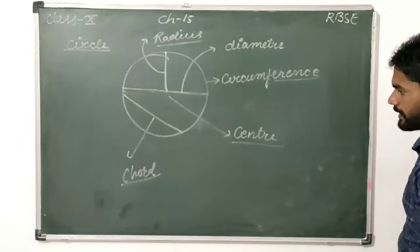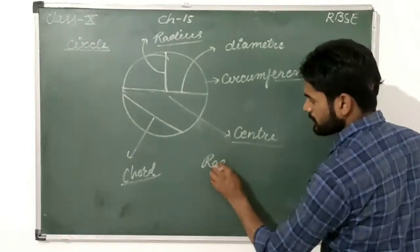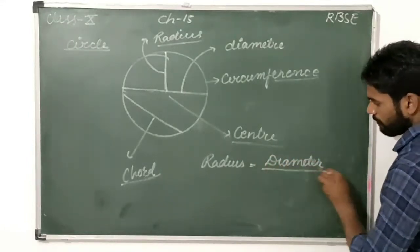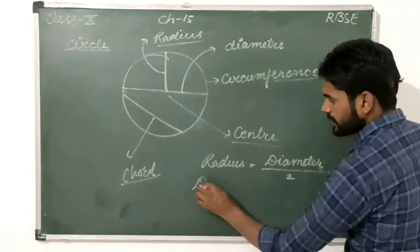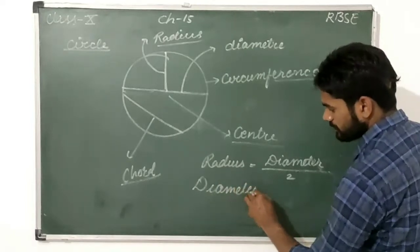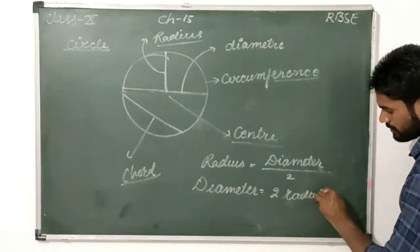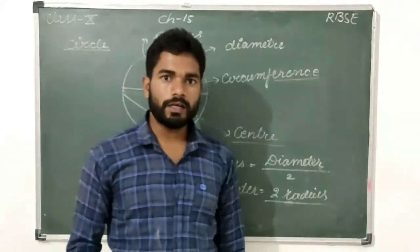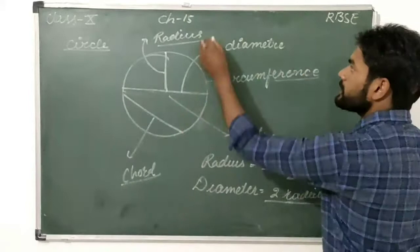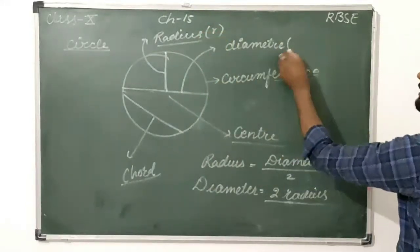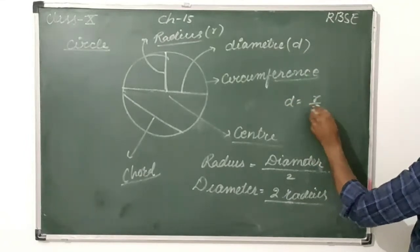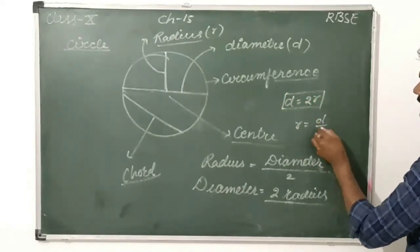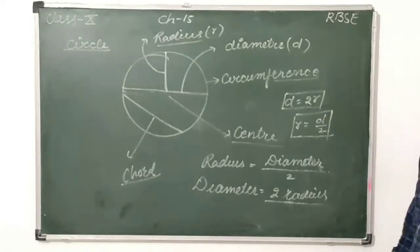The distance between the circumference and the center is known as the radius. The radius is always half of the diameter, and the diameter is twice the radius. The symbol for radius is r and the symbol for diameter is d, so d is equal to 2r and r is equal to d divided by 2. This is a very important part of the circle.